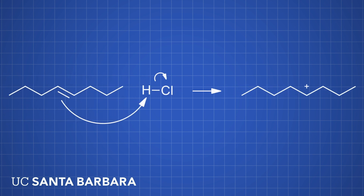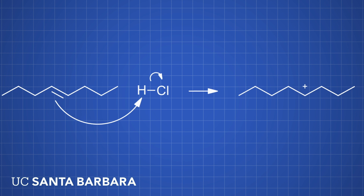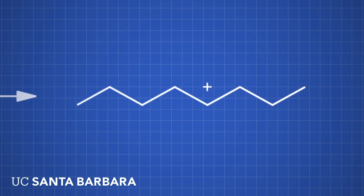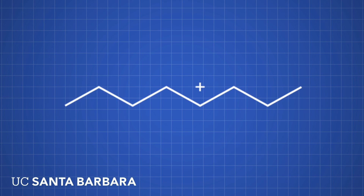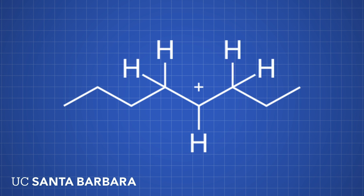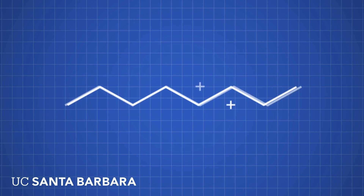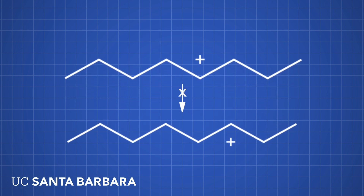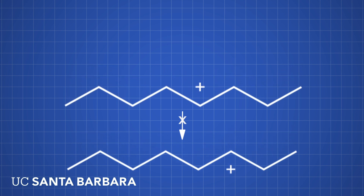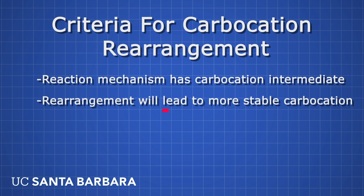Let's do another example. In this example we have a long chain of carbons, and we see that the intermediate does indeed form a carbocation. However, this long chain is fairly symmetrical. So if we do a hydride shift, we notice that the carbocation will change position, but it'll merely change from one secondary carbon to another secondary carbon. These two secondary carbons are so similar in energy level that a hydride shift is not likely to occur here. The second criterion for a carbocation rearrangement is that the rearrangement makes the molecule more stable, and a secondary carbocation is not more stable than another secondary carbocation, generally speaking.